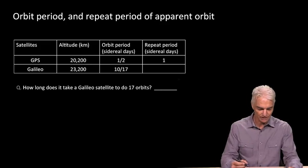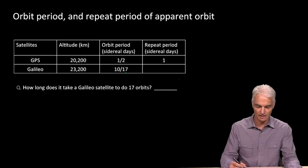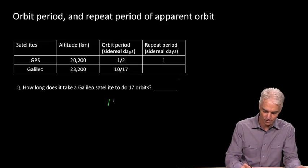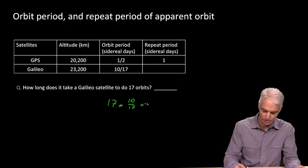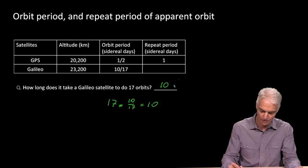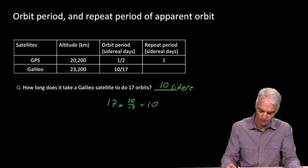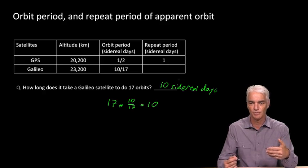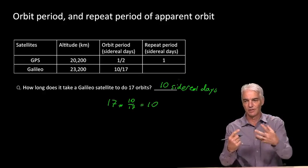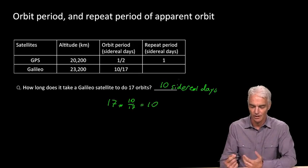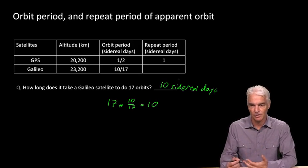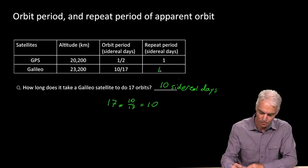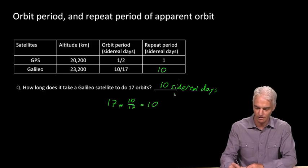Now you've completed that, I'll fill it in here. How long does it take Galileo? It needs to do 17 orbits multiplied by 10/17ths of a sidereal day, which equals 10 days. Nice and simple. So 10 sidereal days to do 17 orbits. After any integer number of sidereal days, the Earth is back where it started in terms of its rotation with respect to inertial space. The satellite's back where it started because it did 17 complete orbits, and so the whole system repeats every 10 sidereal days for Galileo.